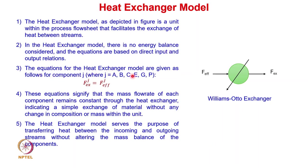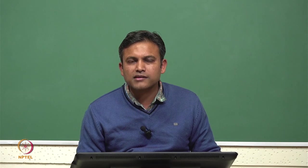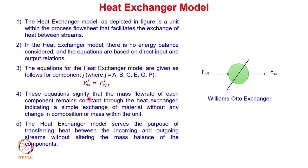Regarding the mass balance for the heat exchanger, there is no change in the mass flow rate of different components. The mass flow rate of each component coming out of the exchanger, F_J,Ex, is exactly the same as what enters from the effluent stream. The equation signifies that mass flow rate of each component remains constant through the heat exchanger — a simple exchange of heat without any change in composition or mass.